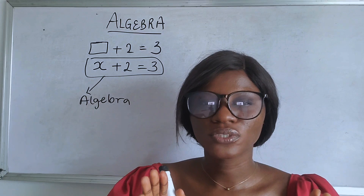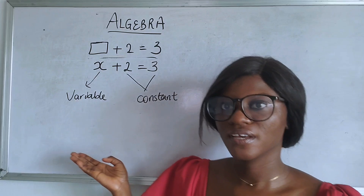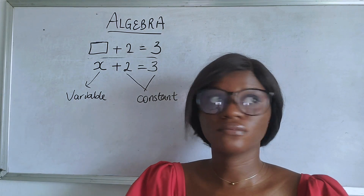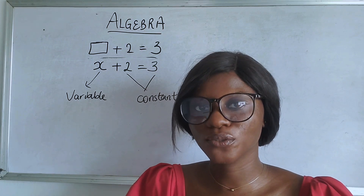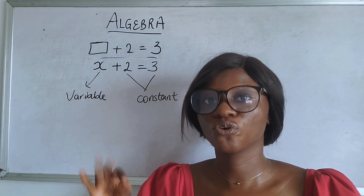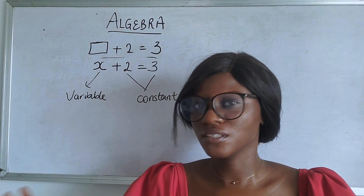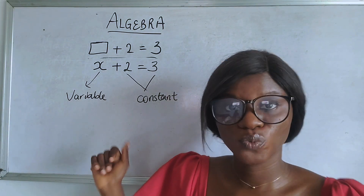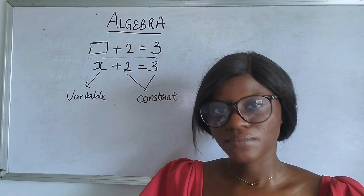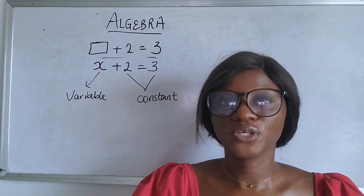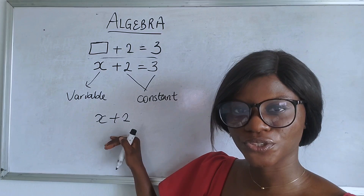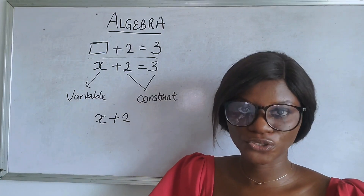This x is the unknown - it can also be called a variable. A variable is a quantity that you do not know; it could change, it could be anything. The variable could be 10, one, nine, or any value until we find it. A constant, on the other hand, is fixed - two is two, three is three - but variables change until we solve to find the value. This is an algebraic equation because there is an equation sign. Where you have something without an equal sign, that is an algebraic expression - you're expressing something.